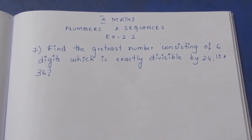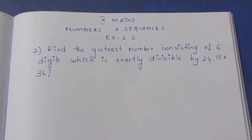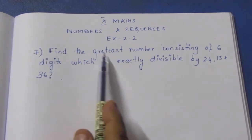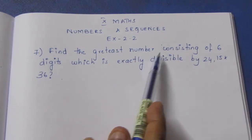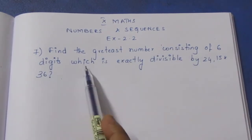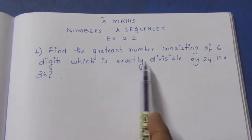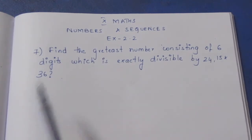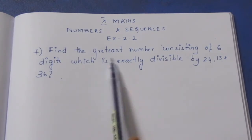Hello viewers, I am Aitli. In Class 10 Maths, Numbers and Sequences, Exercise 2.2, Order 7. The question is: Find the greatest number consisting of 6 digits which is exactly divisible by 24, 15, and 36.